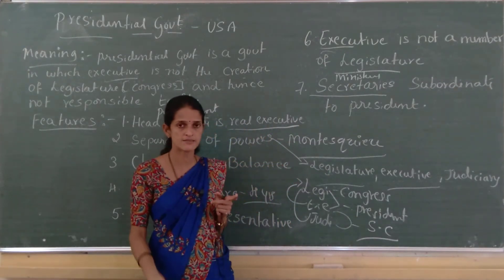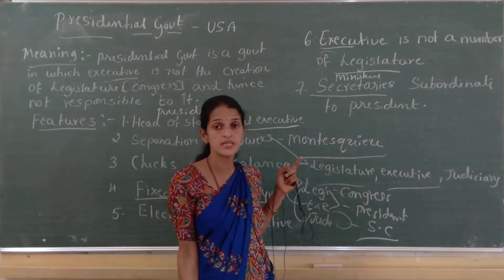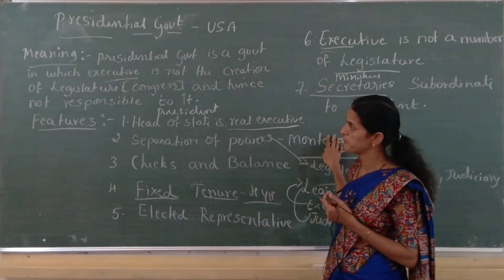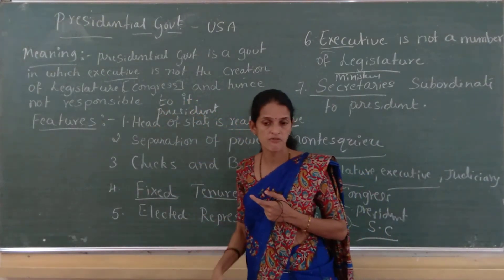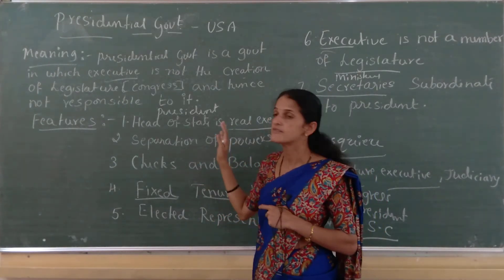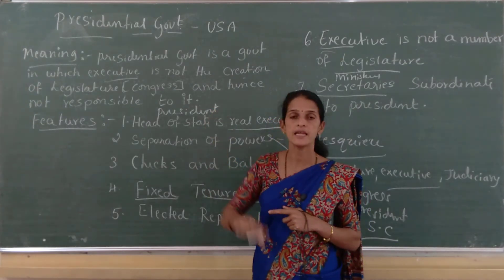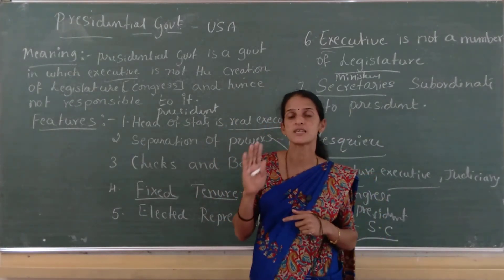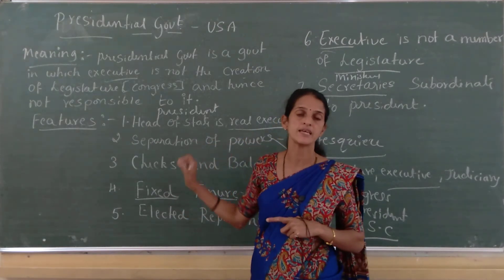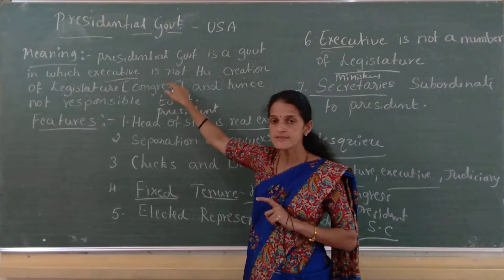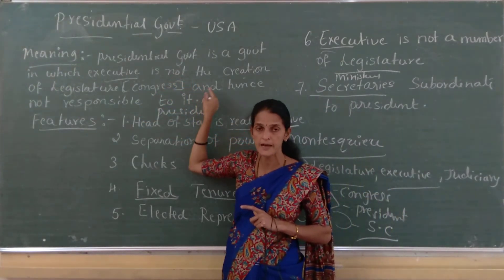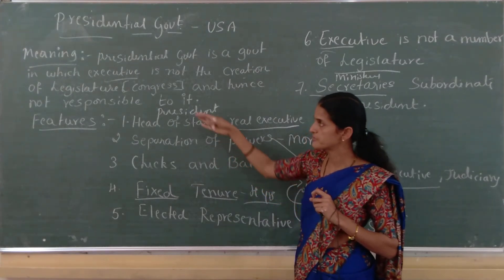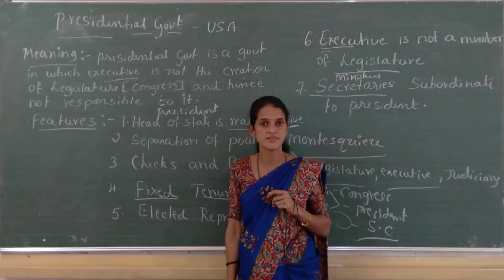The secretaries are subordinate to and responsible to the president. These are the features of presidential form of government. Presidential form of government is a government in which the executive is not the creation of the legislature, and hence the executive is not responsible to the legislature. The president is selected by the citizens of the United States of America, and hence is always responsible to the citizens rather than the legislature.